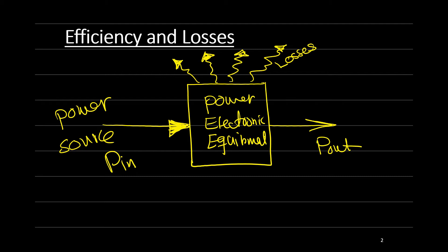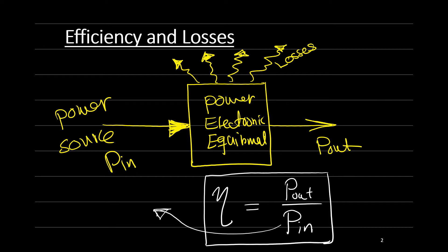By definition, the efficiency, let's say efficiency is equal to eta. This is defined as the output power, P out, over the input power. And as we know that the input power is equal to the losses plus the output power.